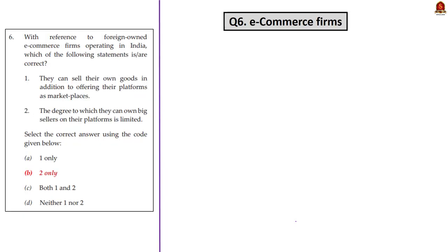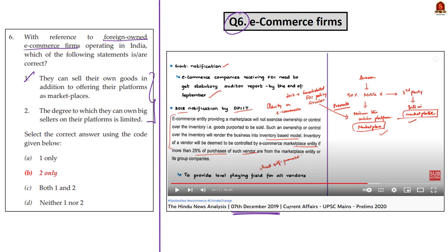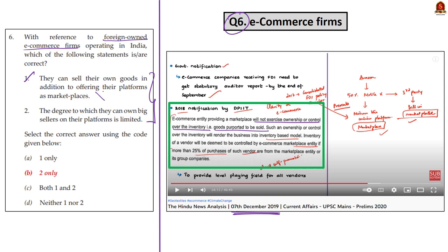Next is the 6th question, about foreign-owned e-commerce firms. It is a two-statement question. In our 7th December 2019 analysis, we saw that foreign e-commerce firms cannot sell their own goods in addition to offering their platforms as marketplace, so statement 1 is incorrect. For statement 2, on the same day we mentioned that per the 2018 notification, an inventory of a vendor having more than 25% of purchases from marketplace entities or group companies will be deemed to be controlled. So statement 2 is correct, and the correct answer is option B.